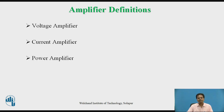The current amplifier can be defined as the amplifier which amplifies mostly the current level of the input signal and provides a proportional output voltage and current signal. The power amplifier can be defined as a combination of voltage amplifier and current amplifier. It amplifies both the voltage level as well as current level of the input signal, providing amplified output voltage as well as amplified current signal. The input is a low-level AC signal and the output is an amplified power signal.